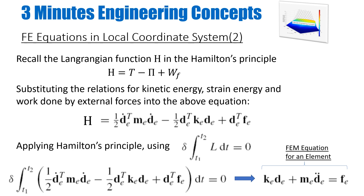Now I know the relationships for kinetic energy in terms of the stiffness matrix, mass matrix, and shape functions, as well as the strain energy and work done. I substitute these values into Hamilton's principle and construct a relationship for the Lagrangian / Hamilton function. I substitute all these values and find the Hamilton function, which contains the mass matrix term (kinetic energy), the stiffness matrix term (strain energy), and the work done by forces.